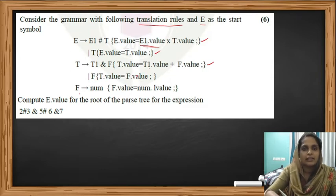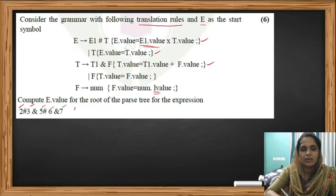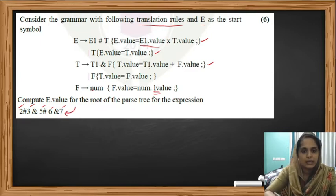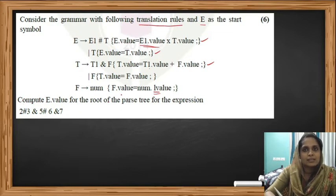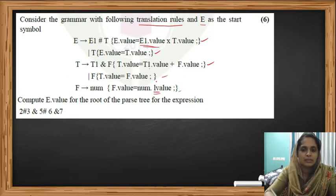Finally, for F produces num, whenever we see that reduction we give the lexical value of num to F. The lexical values here are the numbers 2, 3, 5, 6, 7. Those numbers are the lexical values of the identifier num, so we assign these numerical lexical values to F. These are the translation rules given in the question.